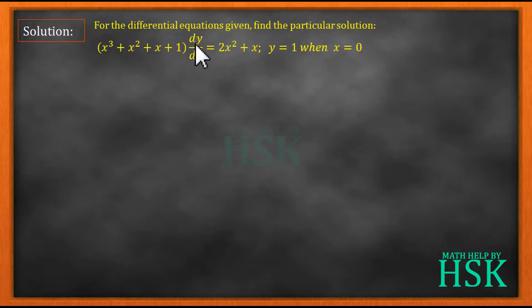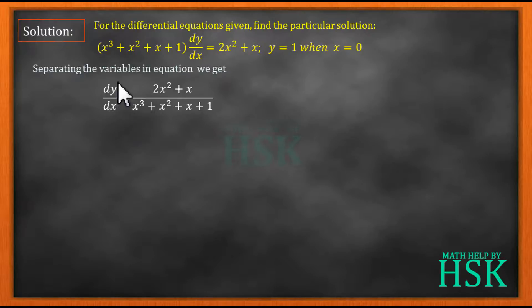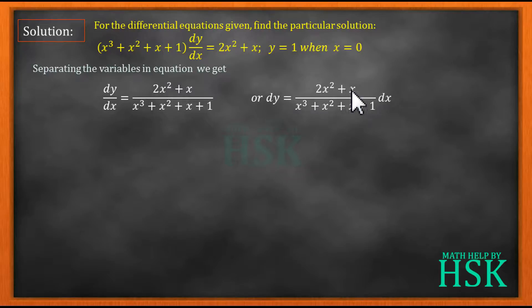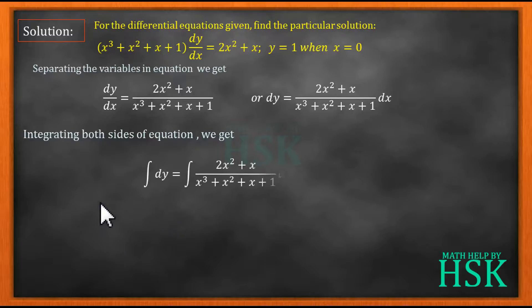We can easily see that we can separate the variables, so it is in the variable separable form. On separating the variables, I can write dy/dx = (2x² + x) / (x³ + x² + x + 1), and further I can write dy = (2x² + x) / (x³ + x² + x + 1) dx. Now the variables are separated and I can integrate both sides.